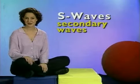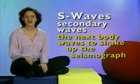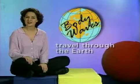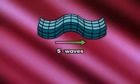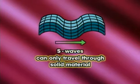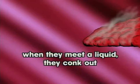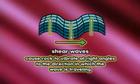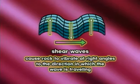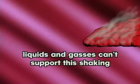S-waves, or secondary waves, are the next body waves to arrive at the seismograph. Body waves travel through the Earth. S-waves are not only slower than P-waves, but they can only travel through solid material — when they meet a liquid, they basically conk out. S-waves are called shear waves because they cause rock to vibrate at right angles to the direction the wave is traveling, creating a sideways shaking motion. Liquids and gases can't support this shaking, which is why S-waves can't travel through liquid or gas.